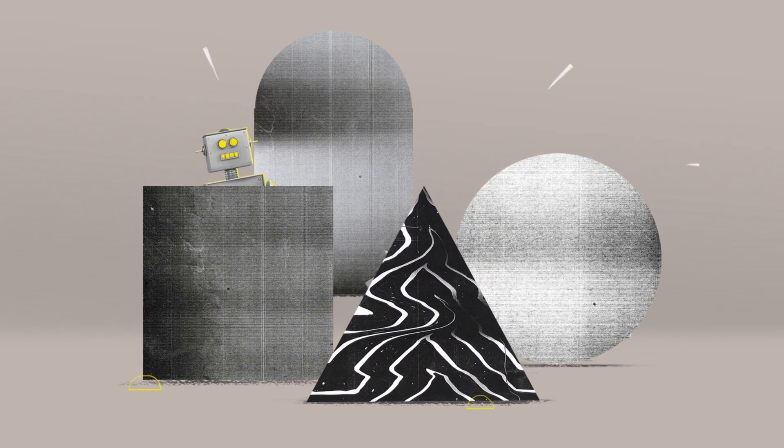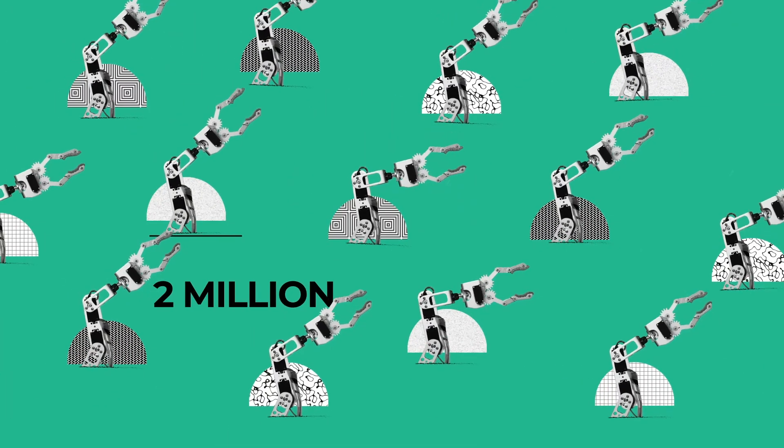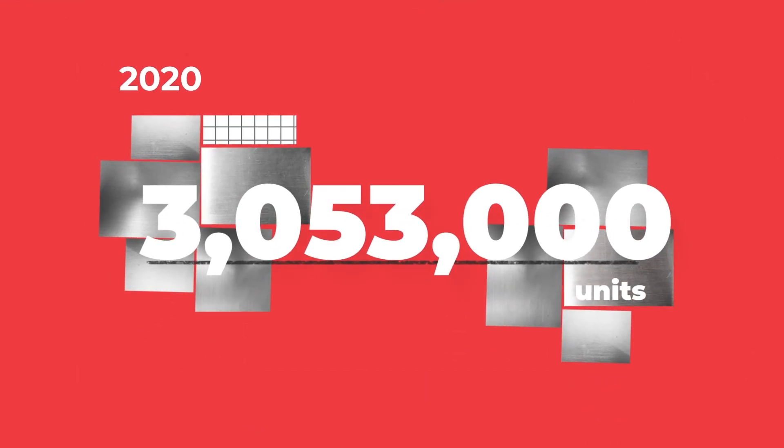Robots. They're everywhere, whether you notice them or not. By the end of 2016, nearly 2 million robotics have been put to work. By 2020, we're looking at 3,053,000 units.